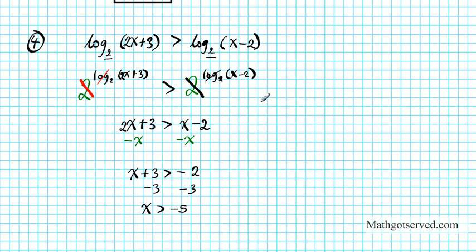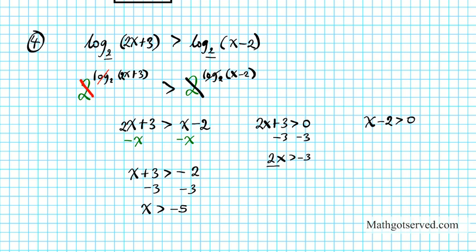This is one piece of our solution. Remember that logarithmic arguments must be positive, so another condition is that the solution must also satisfy: 2x + 3 > 0 and x − 2 > 0. To solve the first, subtract 3 from both sides: 2x > −3, divide by 2: x > −3/2. For the second, add 2 to both sides: x > 2.